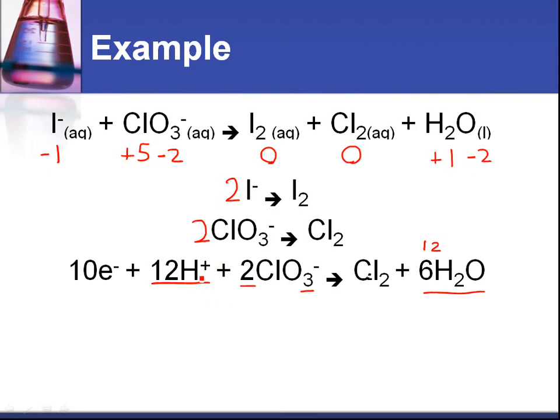The next thing we do is balance for charge. We've got 12 positives and we've got two negatives, two times that, and we need to get the same on the right hand side. The right hand side has no charge. So the way we do that is by adding 10 electrons to the left hand side. We're now balanced for charge as well.